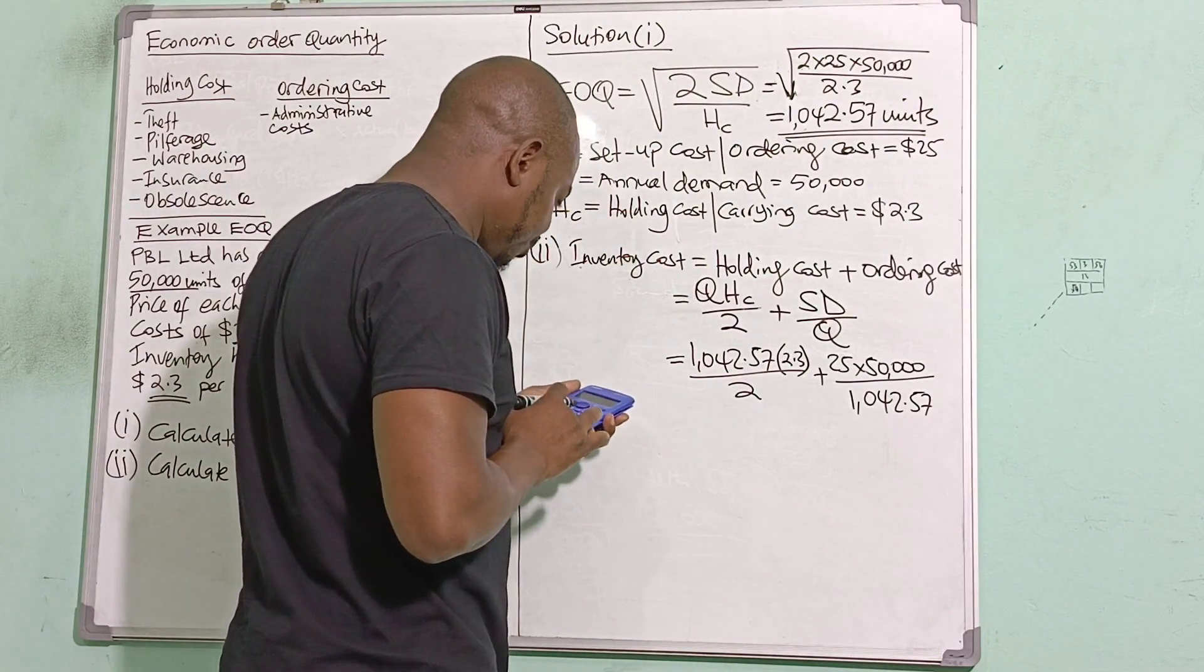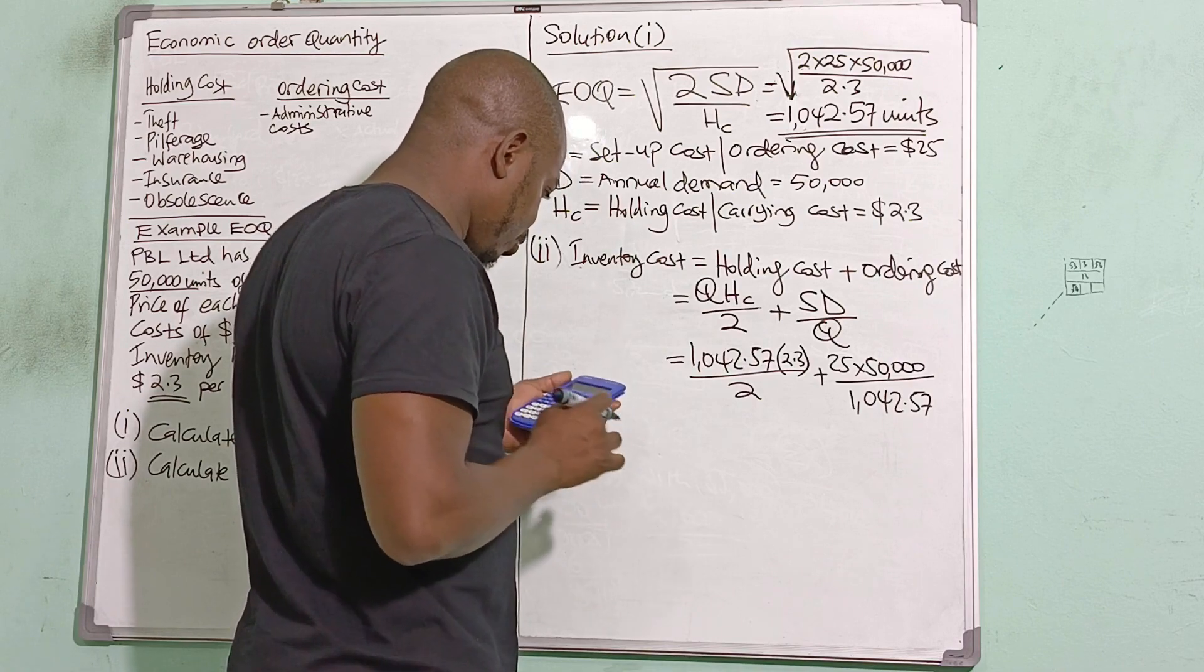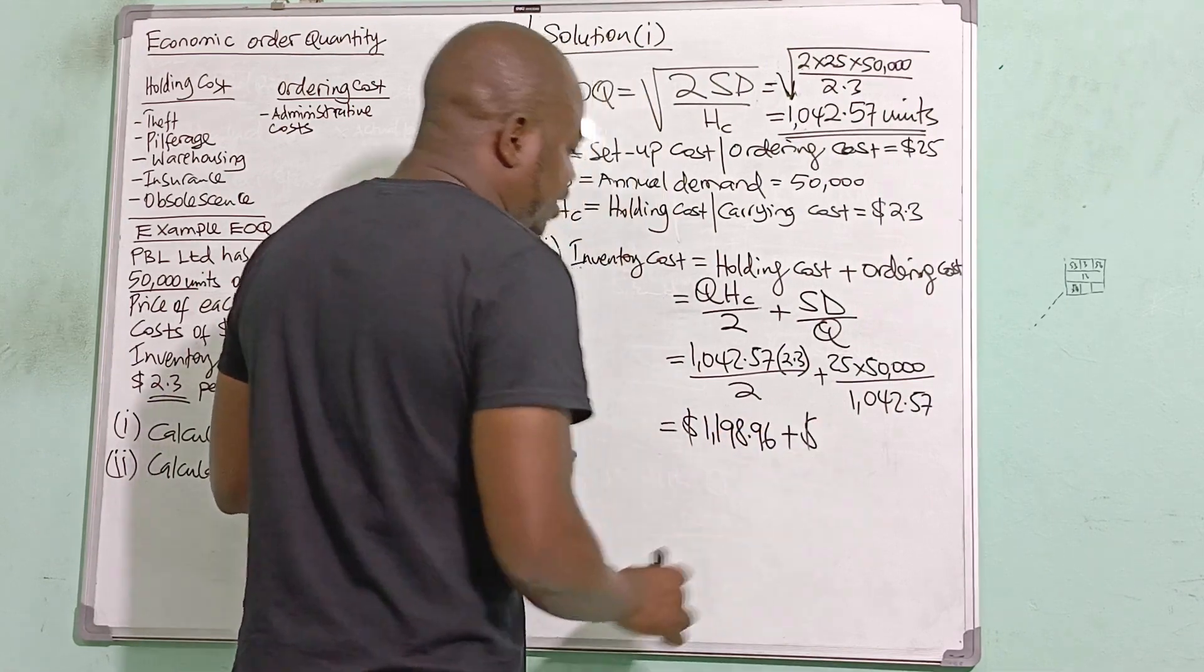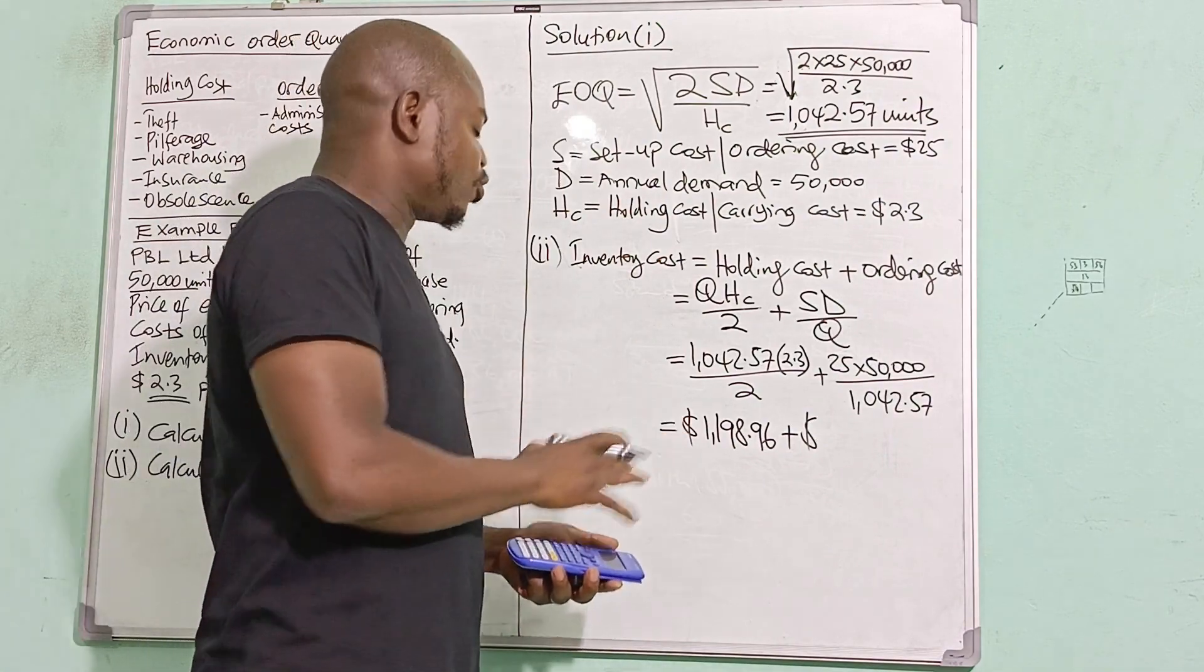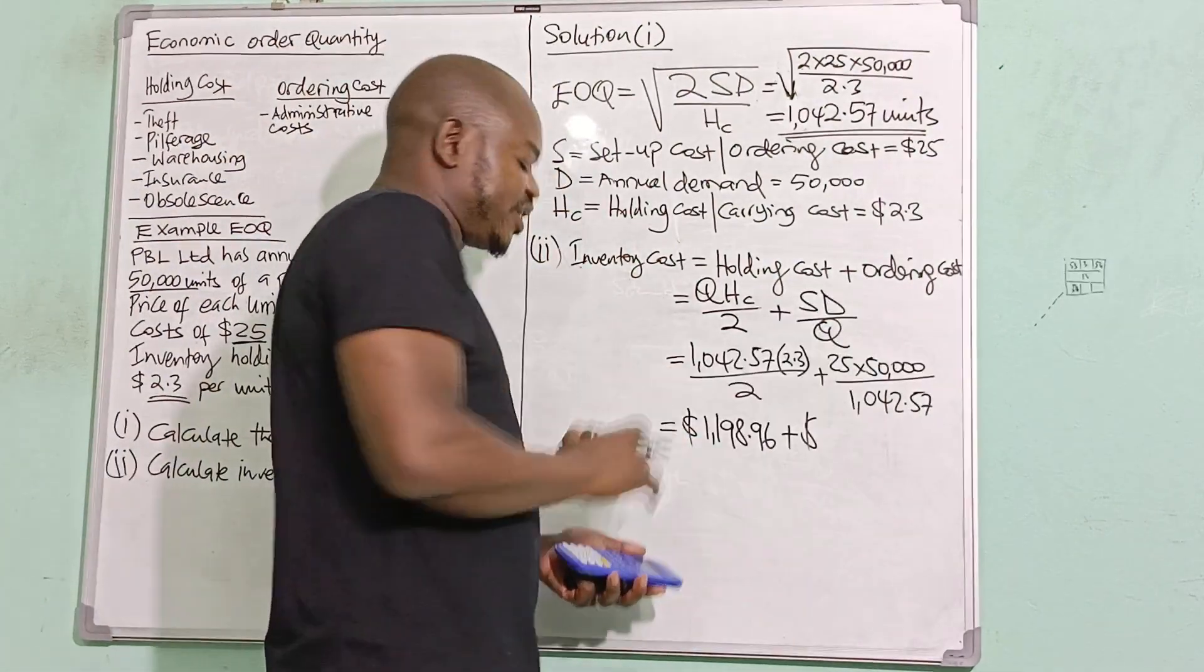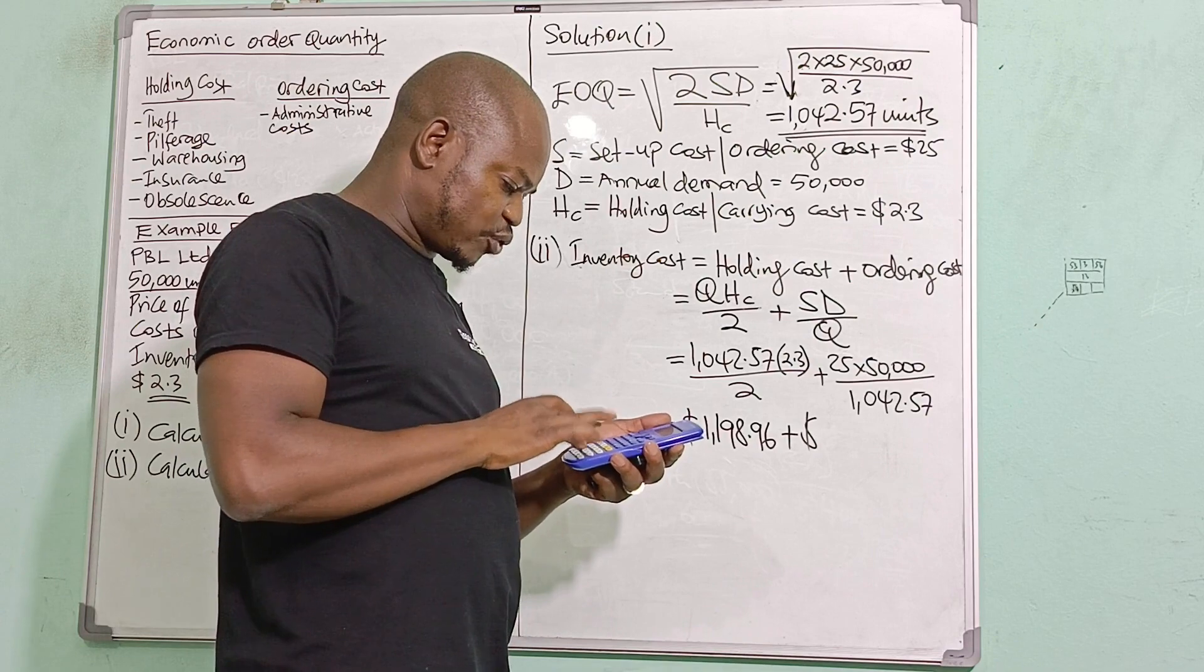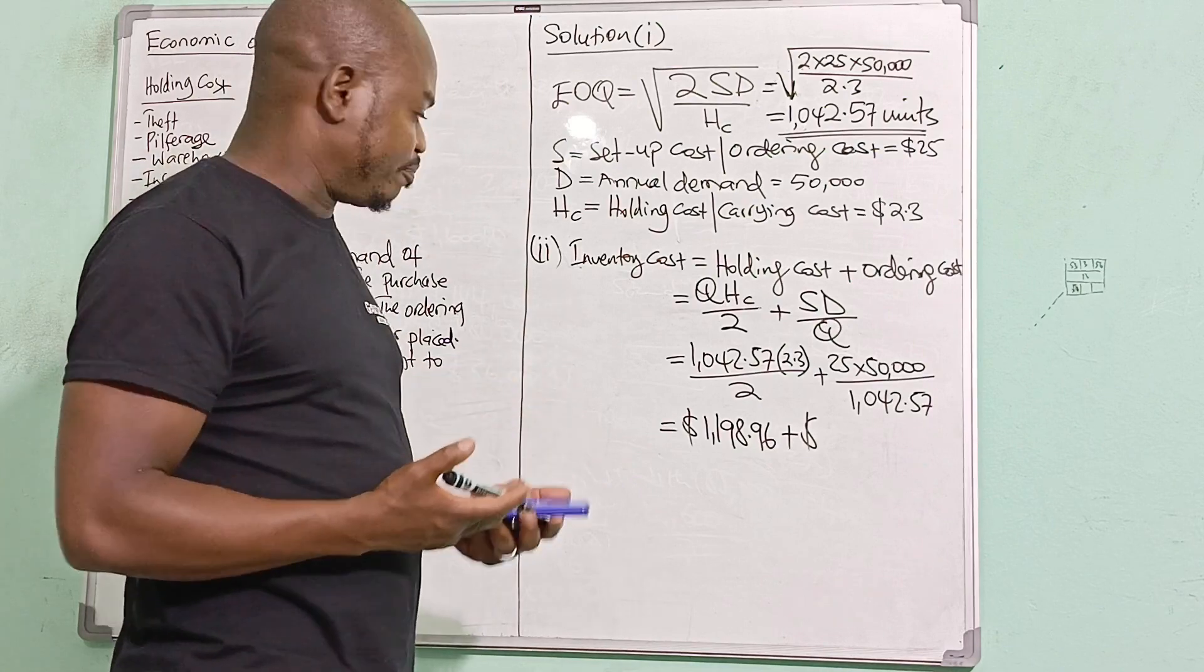So let me process this on my calculator: 1,042.57 multiplied by 2.3 divided by 2, I have 1,198.96. Now, remember what I said: the answer that I find this side should be almost the same as the answer this side, because the assumption at EOQ is that holding cost equals ordering cost. So let's process. I will know if I find a different answer, I will know there is a mistake I've made somewhere. But if the answer comes out the same, then it simply means that my computations were perfect.